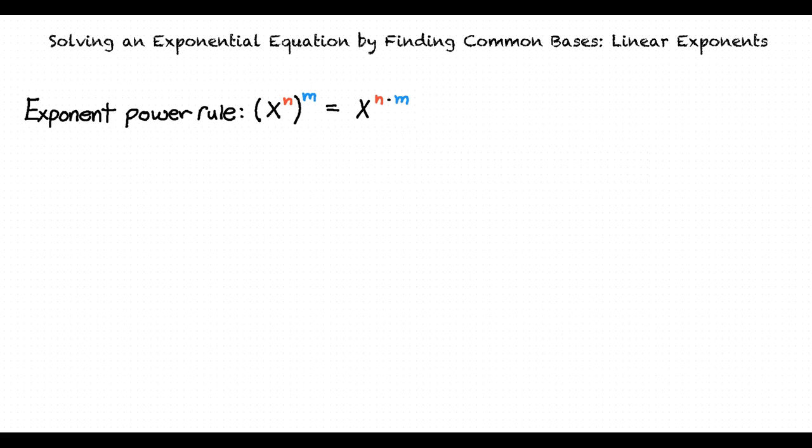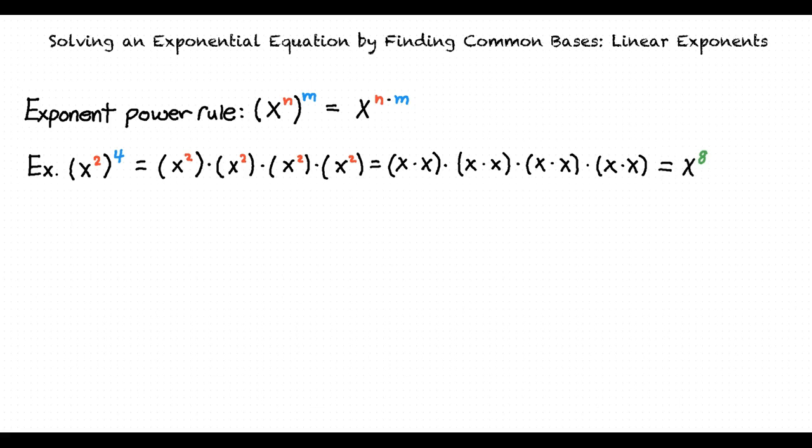An example of this would be x squared to the fourth power. If we were to express x squared to the fourth power as a product of the variable x, it would look like this. As you can see, x squared to the fourth power is the same as x to the eighth power. We could have found that x squared to the fourth power is x to the eighth power also by multiplying the exponents 2 and 4 together to get 8.